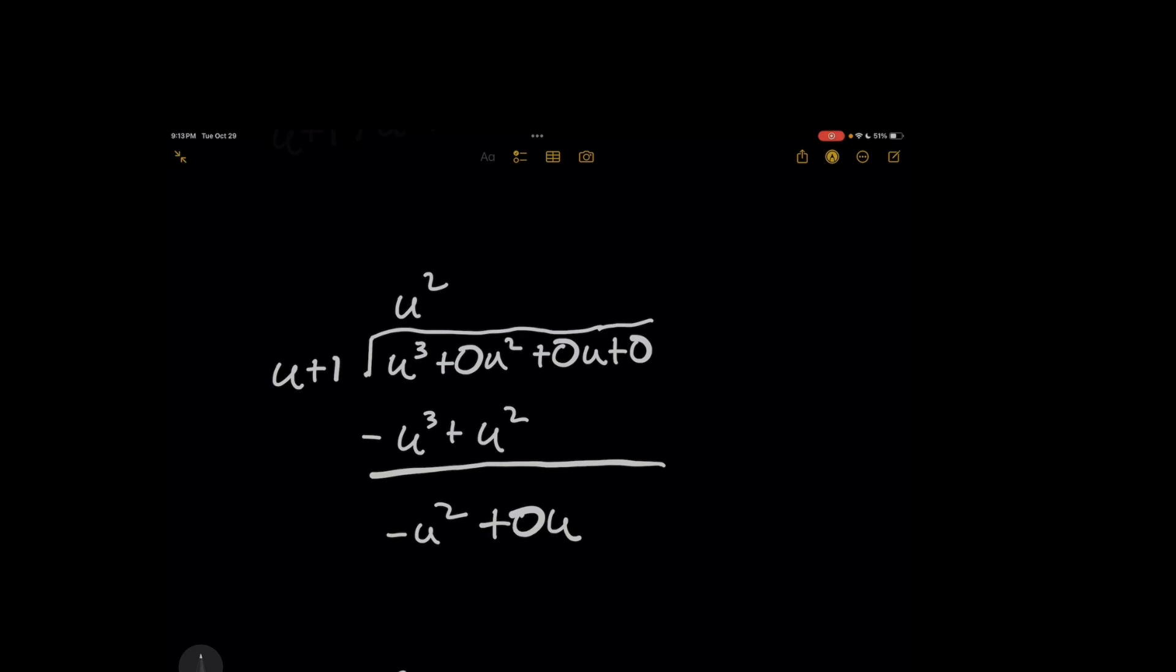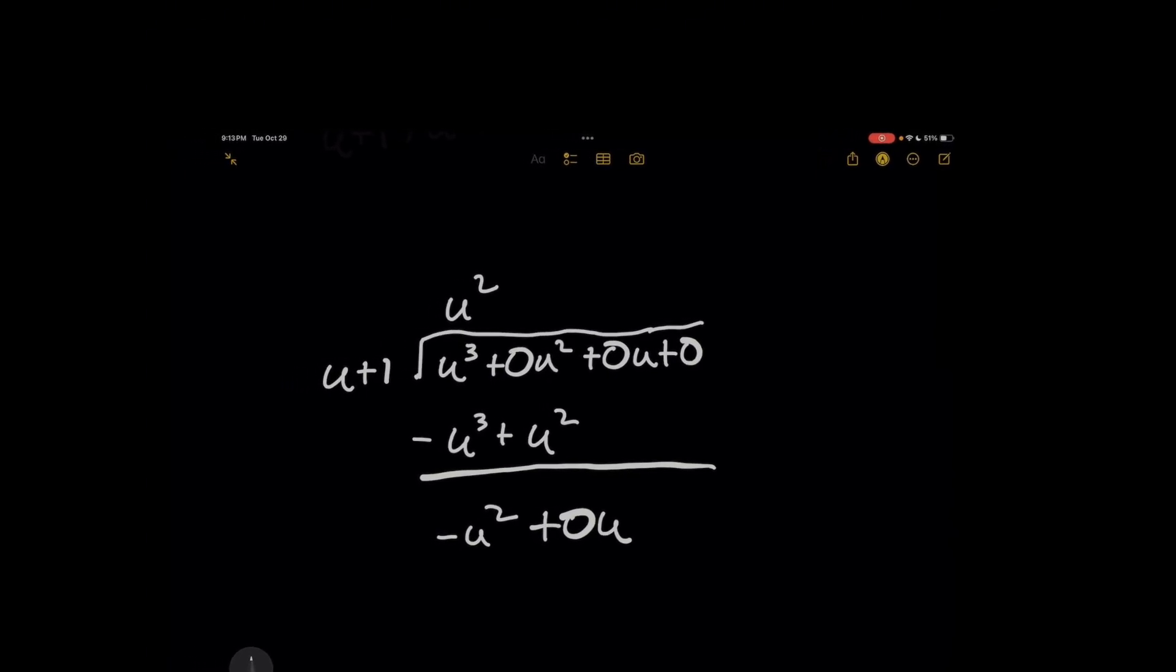So now what I want to do is for negative u squared plus zero u, once again, how many times does u plus 1 go into this? For u plus 1, take the highest power term, which is u. And then for this expression here, the highest power term is negative u squared. So u times a negative u will give you negative u squared.